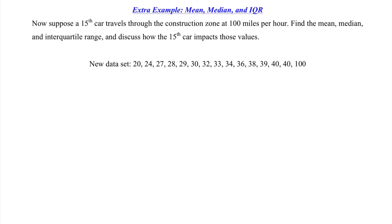Let's jump into the next example where we discuss the mean, median, and IQR all together. Suppose a 15th car travels through the construction zone going 100 miles an hour. They ask us to find the mean, median, and interquartile range, and discuss how the 15th car impacts those three values. We're given the new data set including the 100 mph car, and thankfully it's in ascending order, so we don't have to sort it again.